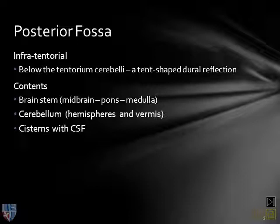The contents of the posterior fossa include the brain stem — all three parts: midbrain, pons, and medulla — the cerebellum, including the hemispheres and the vermis.